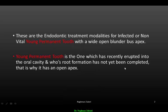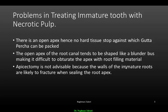These are the endodontic treatment modalities for an infected or non-vital young permanent tooth with a wide open blunderbuss apex. A young permanent tooth is one which has recently erupted into the oral cavity and whose root formation has not yet been completed — that is why there is an open apex. We know that the apex closes after three years of the eruption of a permanent tooth. If such a tooth gets involved endodontically, there will be a problem in treating it.